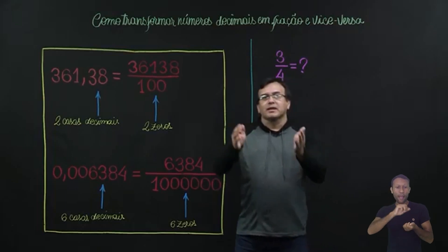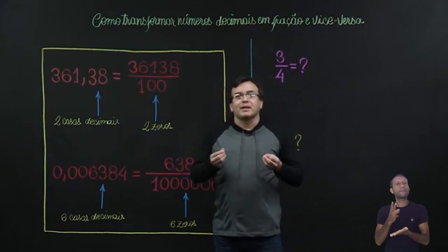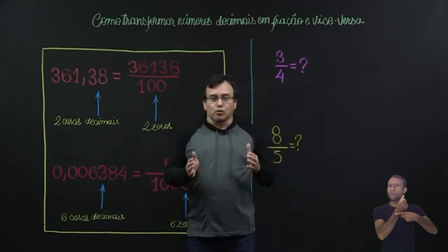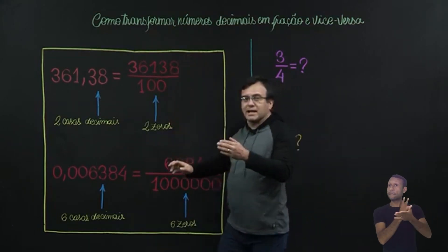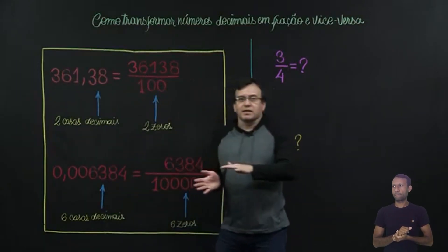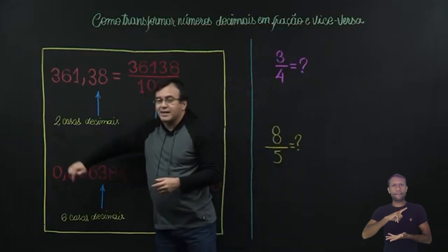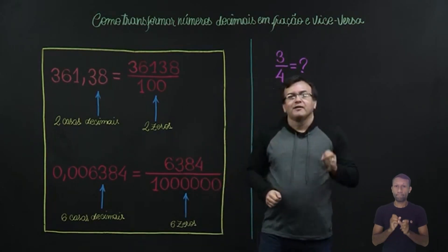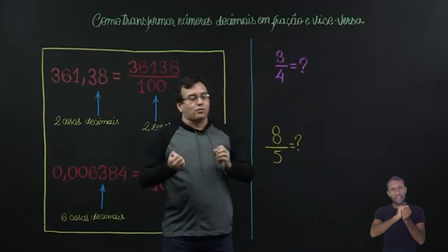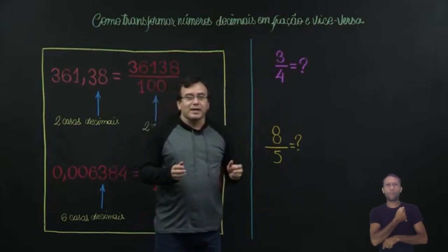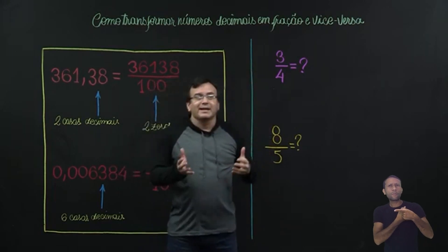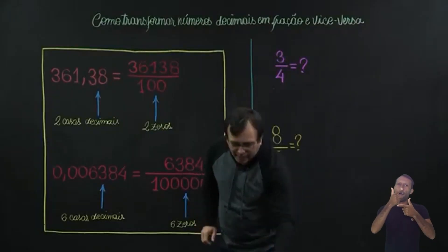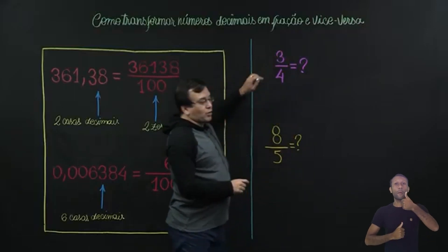Então, a transformação de um número decimal para uma fração se dá sempre dessa maneira. Em qualquer dos casos, o denominador sempre será um número múltiplo de 10, e o numerador será o número decimal que você tem no início, tirando a vírgula. Se você tiver zeros à esquerda, pode esquecer esses zeros. Vamos então à segunda parte, que é fazer o contrário: eu tenho um número em forma de fração e quero transformá-lo em decimal. Para isso, a gente vai utilizar a operação matemática da divisão. O nosso primeiro número aqui é 3 quartos, ou 3 sobre 4.